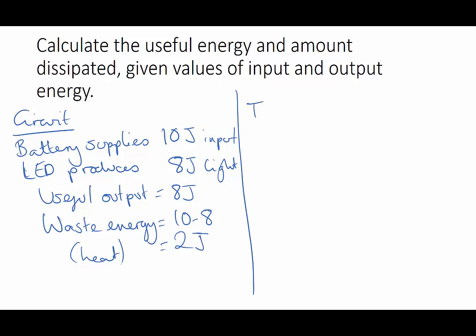If we look at another example, slightly more complicated, a TV. The TV gets its energy supply from the electrical supply, so let's say it uses 100 joules of energy. For 100 joules of energy maybe 60 joules of that energy is output as light and maybe another 20 joules as sound.